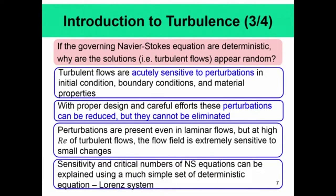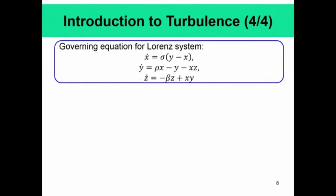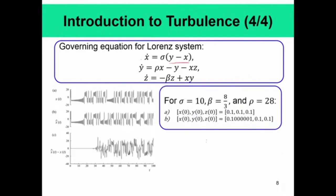This can be appreciated through the Lorenz system. The chaotic nature of turbulence arises because the governing equation is a non-linear partial differential equation. In the Lorenz system — given by ẋ, ẏ, and ż as a coupled set of equations — for given constants σ, β, and ρ, you solve the system over time with initial conditions x(0), y(0), z(0).